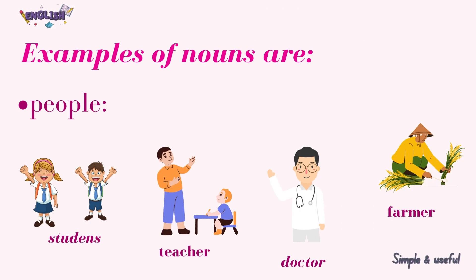Examples of nouns — People: Student, Teacher, Girl, Actor, Baker, Doctor, or Farmer.